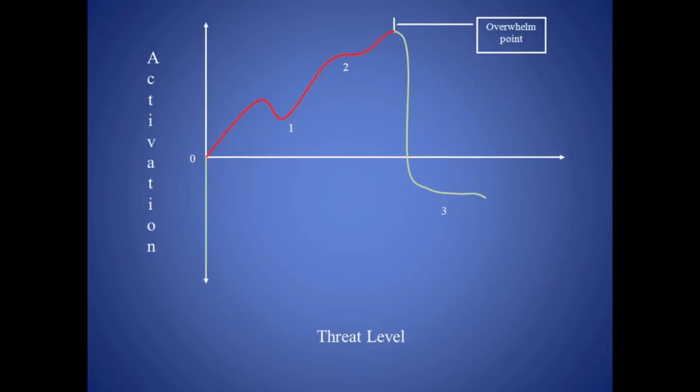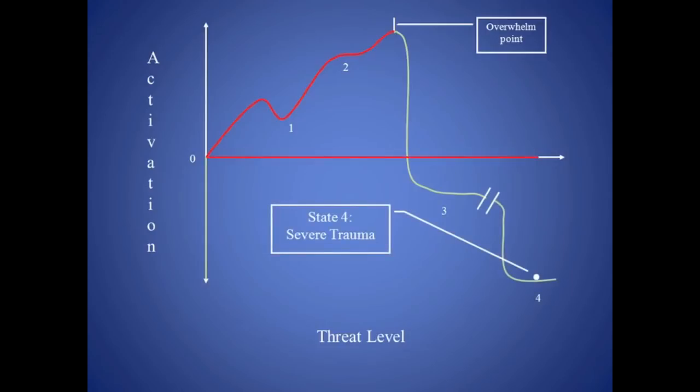The dual activated nature of state three has an adaptive survival value to it. If the lion gets distracted or the cat batting the mouse around gets bored, the anxiety and hot symptoms of state one and two are still available to turn on and get the zebra or the mouse to safety. Fight or flight are still available in the off chance that there's a possible way out. But if that doesn't happen, let's say the lion doesn't get distracted but instead picks up the zebra and takes it into her den where there are six other lions waiting. At this point, there's no solution. There's no possible escape and the nervous system moves to the final stage on the map, state four, or severe trauma.